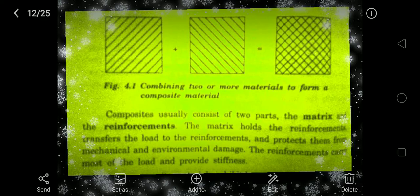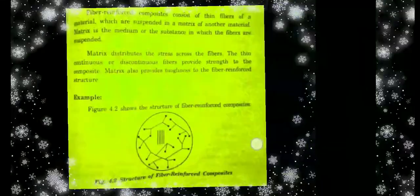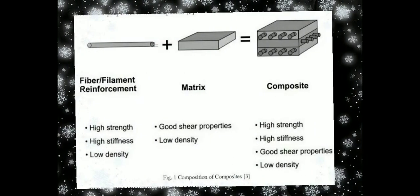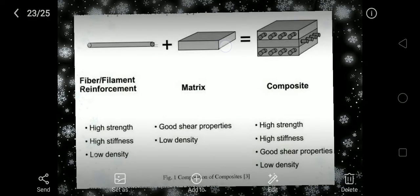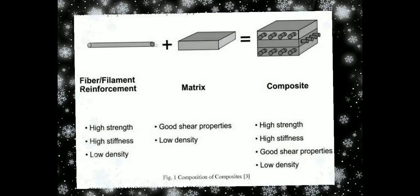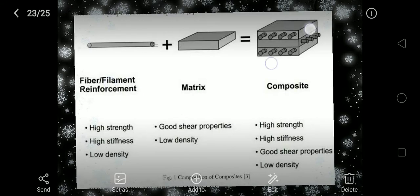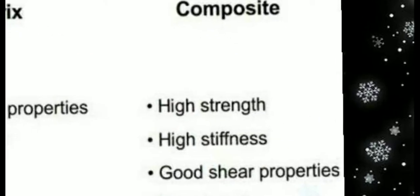There are two main parts in composites: one is the matrix and the other is reinforcement. A composite material has two parts — matrix and fiber reinforcement. The matrix is the basic component which holds the fibers, and that is what gives us the result of the composite. The properties shown are for matrix, for fiber, and for the final composite.